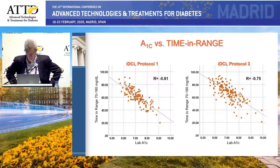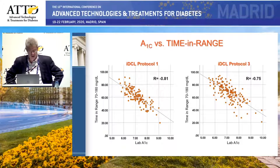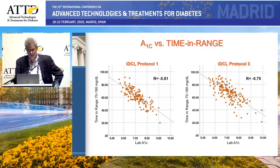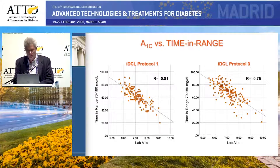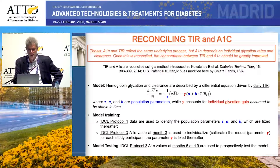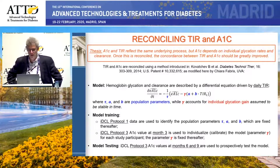This is from a talk this morning by Chiara Fabris from the University of Virginia, who works with Dr. Kvachev, showing again very similar discordance frequently between the lab A1C and time in range, with correlations of about 0.75 or 0.81. What she did, which was presented in that paper, was try to look at the explanation for the discrepancy.